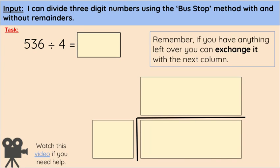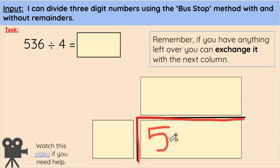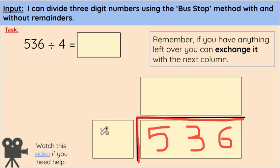We're going to start using our bus stop method just like normal. So first of all, let's draw our bus stop. Then we can put our large number, 536, into the bus stop. Then we're going to put our divisor, which is 4, outside of the bus stop.